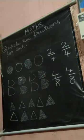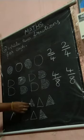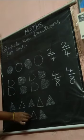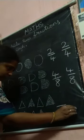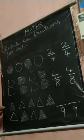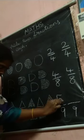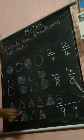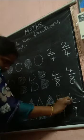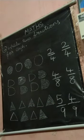Here is the next question. First count the objects: 1, 2, 3, 4, 5, 6, 7, 8, 9. Total number of objects is 9. How many objects are shaded? Count: 1, 2, 3, 4, 5. Five objects are shaded. How many objects are not shaded? 1, 2, 3, 4. First count the total number of objects, then count the shaded objects, then count the not shaded objects. Alright.